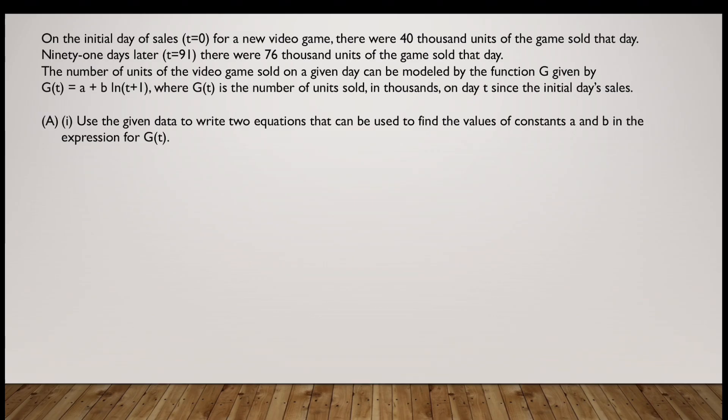Now I have a sample question with me right here. It says on the initial day of sales, t equal to 0, for a new video game there were 40,000 units of the game sold that day. Ninety-one days later, which is t equal to 91, there were 76,000 units of the game sold that day. The number of units of the video game sold on a given day can be modeled by the function G given by G(t) equals a plus b times ln(t plus 1), where G(t) is obviously the number of units sold in thousands on day t since initial day sale.